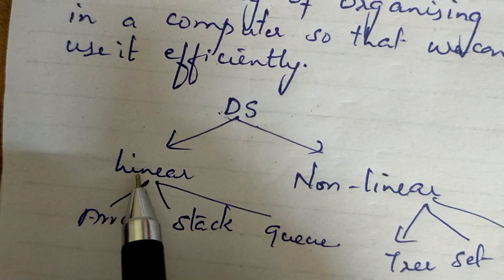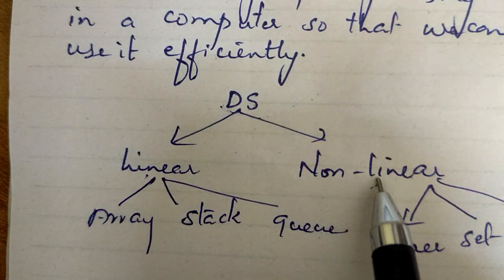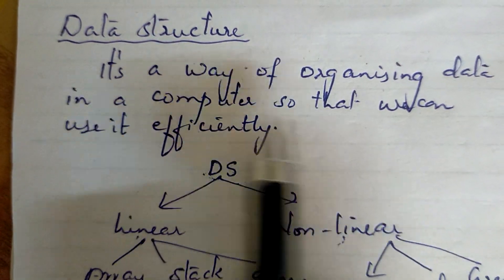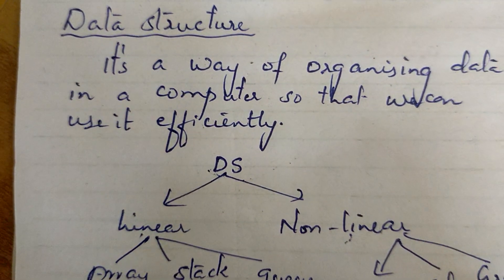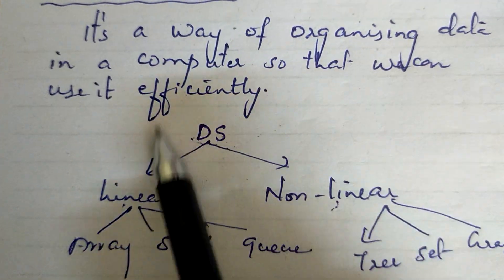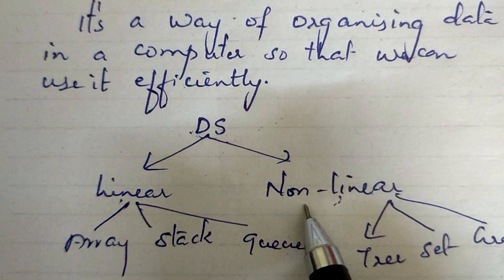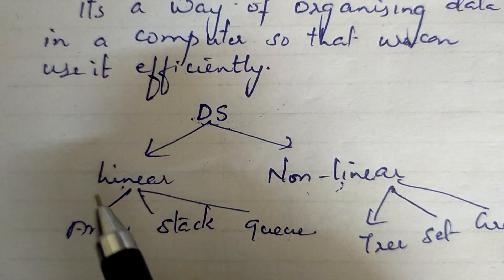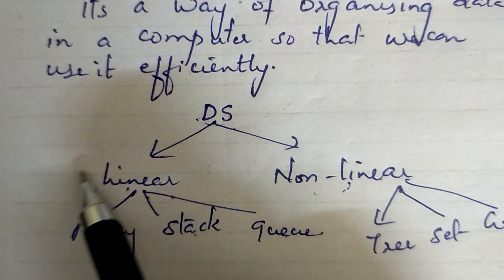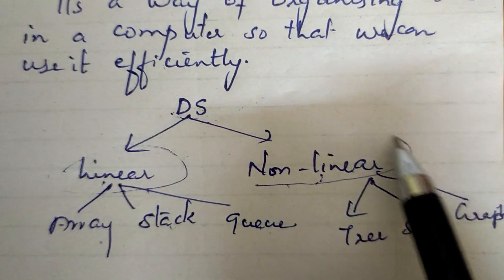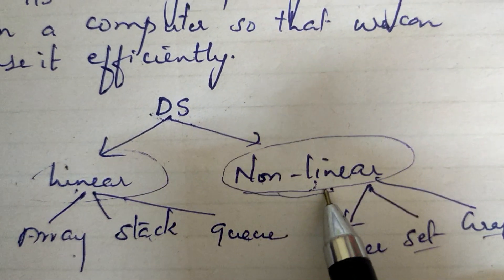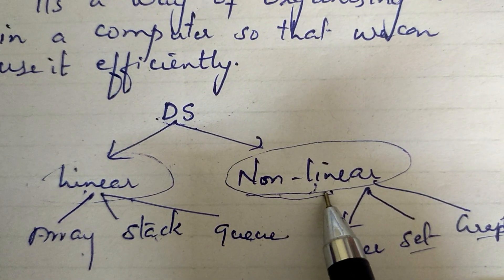The data structure is divided into two types: linear data structure and non-linear data structure. A data structure is a way of organizing data by considering its relationship to each other, so that we can use our data efficiently. Array, stack, and queue are examples of linear data structure, whereas tree, set, and graph are examples of non-linear data structure.